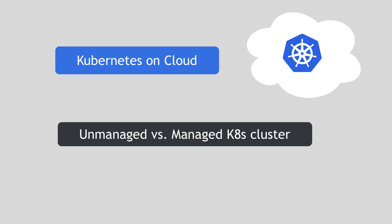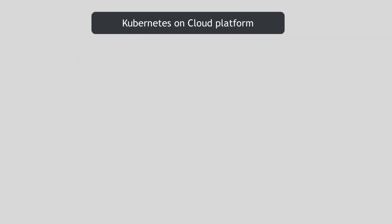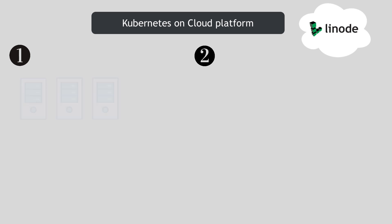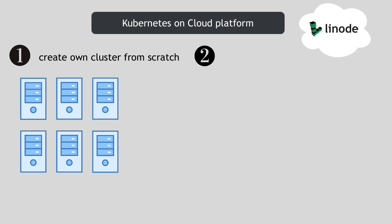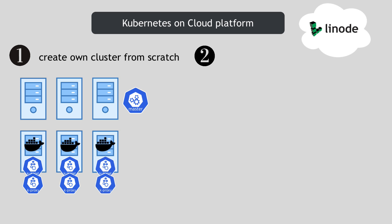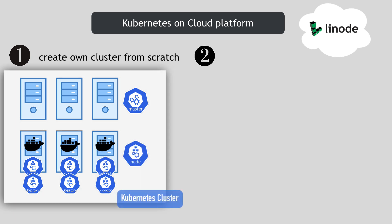First of all, where will your Kubernetes cluster for the application be deployed? Consider you want to set up a Kubernetes cluster on a cloud platform like Linode. There are two options. Option number one is you can spin up, let's say, six Linode server instances and create your own Kubernetes cluster from scratch, meaning you install master processes on three nodes and make them master nodes, then install the worker processes like kubectl, kubeproxy, and container runtime like Docker on the other three and make them worker nodes. Once set up, you have a cluster and can deploy your applications on it.